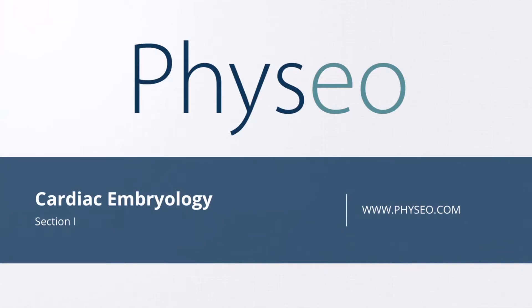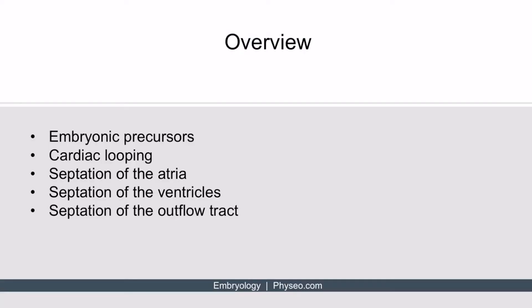Welcome to section one of cardiac embryology. In this section, we'll be discussing the normal development of the heart. Here's an overview of what we'll be discussing, including embryonic precursors, cardiac looping, septation of the atria, septation of the ventricles, and septation of the outflow tract.